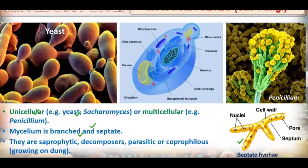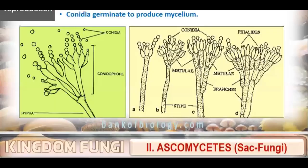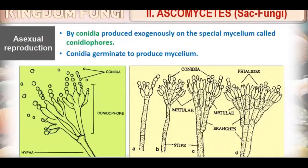Ascomycetes can be saprophytic, helping in decomposing substances, or parasitic on various plants and animals, or coprophilous — growing on dung. Remember: unicellular fungi (yeast) belongs to the class Ascomycetes.